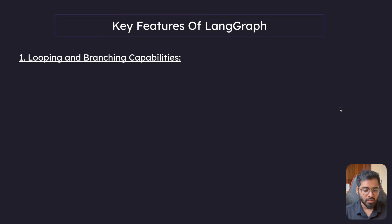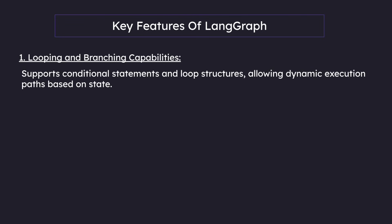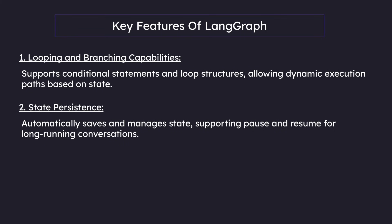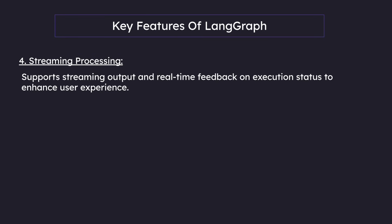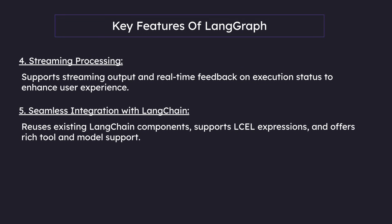Let's look at some key features of LangGraph. First, looping and branching abilities - it supports conditional statements and loop structures, allowing dynamic execution paths based on state. Second, state persistence - automatic saves and manages state, supporting pause and resume for long-running conversations. Third, human-machine interaction support - allows inserting human review during execution, supporting state editing and modification. Fourth, streaming processing - supports streaming output and real-time feedback on execution status to enhance user experience. Fifth, seamless integration with LangChain - reuses existing LangChain components, supports the LangChain expression language, and offers rich tool and model support.